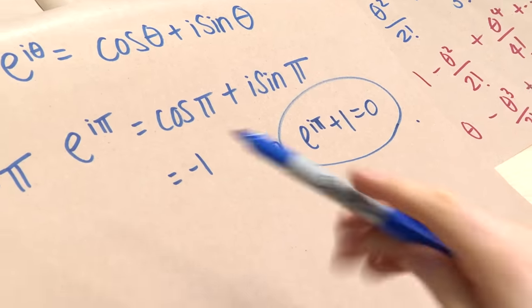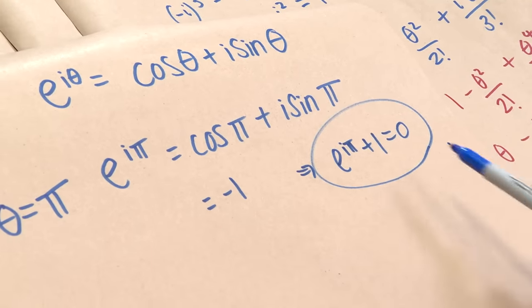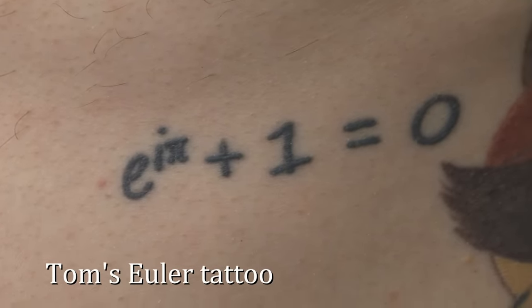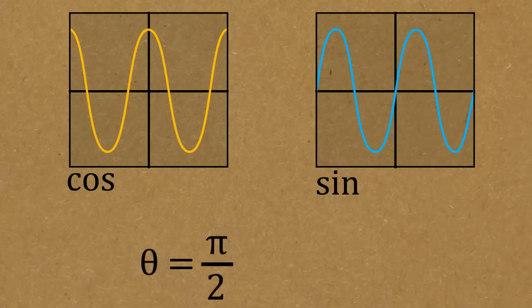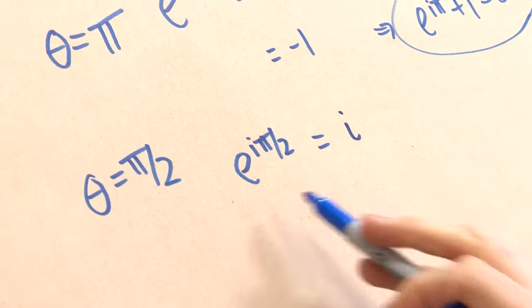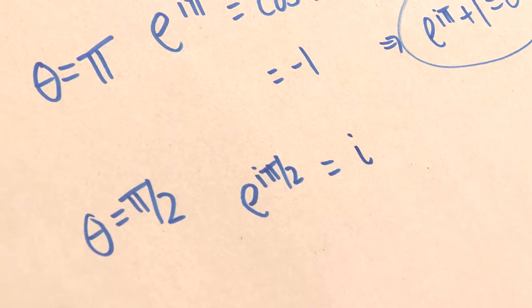That's the favorite form — getting the zero in there. You can also plug in other values of theta. For theta equals pi over 2 (90 degrees): e to the i·pi over 2 equals cos(pi/2) plus i·sin(pi/2) equals 0 plus i times 1, so e to the i·pi over 2 equals i. That's a nice alternative definition of i, coming from the same formula as Euler's identity.